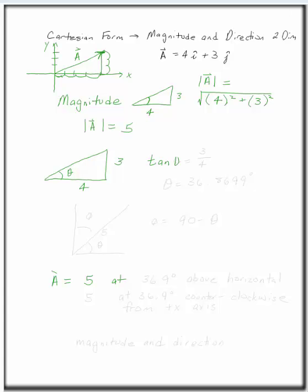Tangent of theta is 3 over 4. So theta is 36.8699 or something like that. We could actually take the arc tan of 3 fourths.